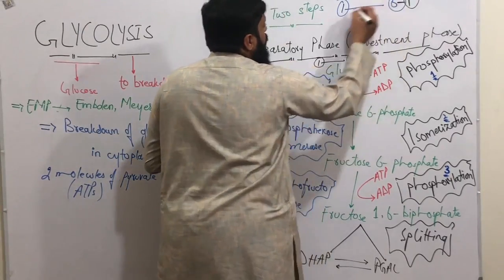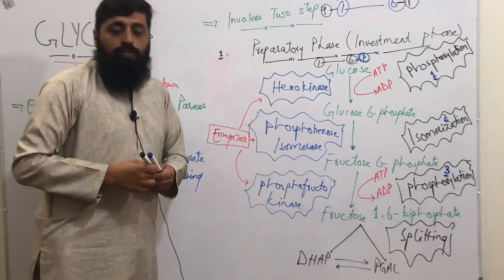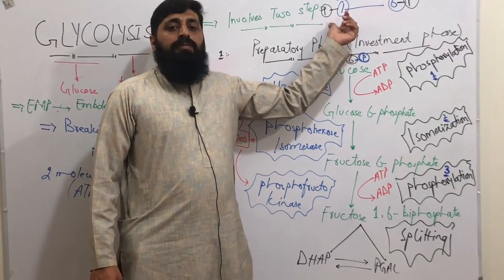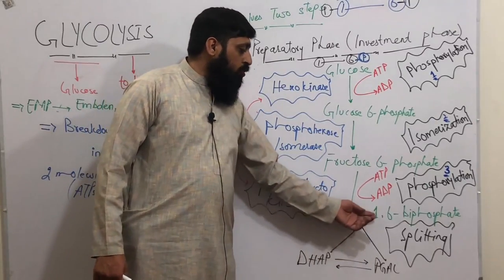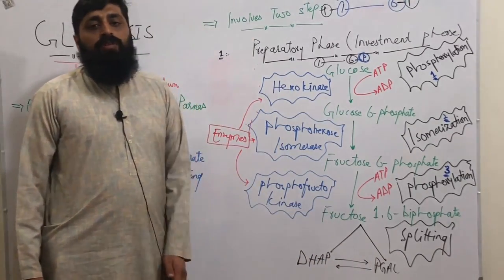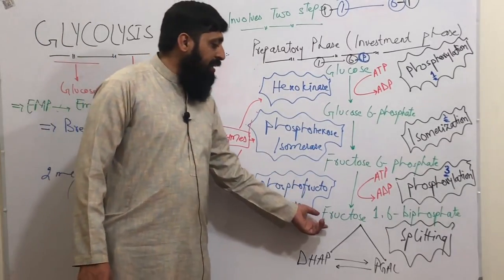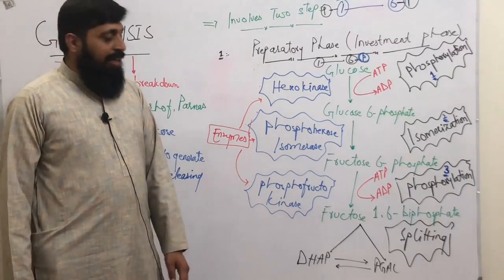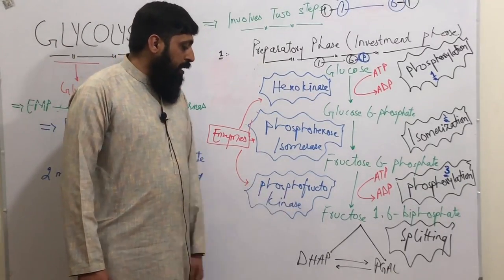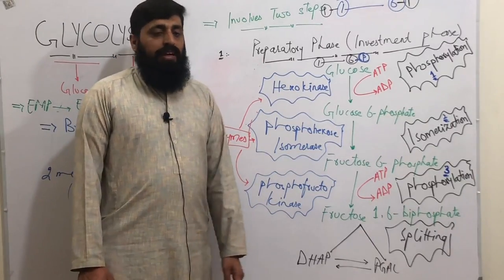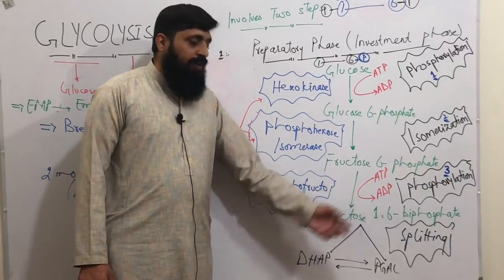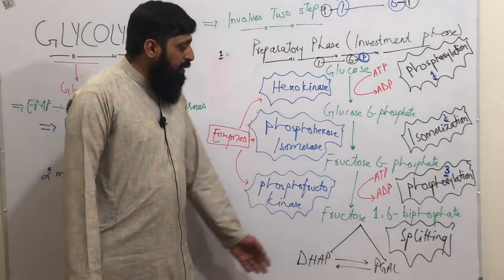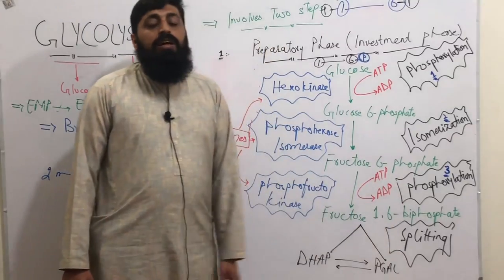When phosphate attaches to carbon one, fructose-6-phosphate becomes fructose-1,6-bisphosphate — 'bis' meaning two, so now phosphate count becomes two. The enzyme helping in this reaction is phosphofructokinase, which converts fructose-6-phosphate into fructose-1,6-bisphosphate. This is the third step, which we call phosphorylation.